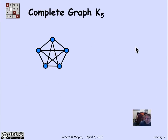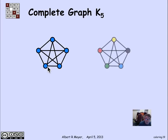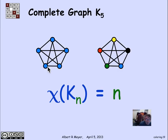The complete graph on five vertices has every vertex adjacent to the other four, so five colors are needed — they must all have different colors. In general, the chromatic number of the complete graph K_n, where every vertex is adjacent to the other n−1, is n.